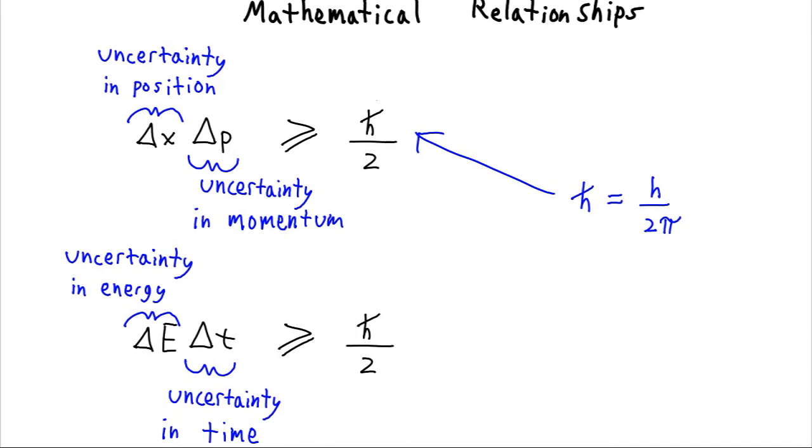And we can write down a very similar looking expression for the uncertainty of energy times the uncertainty in time or duration is going to, again, be greater than equal to some minimum value of h-bar over 2.